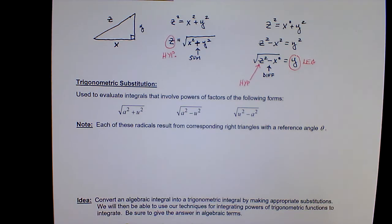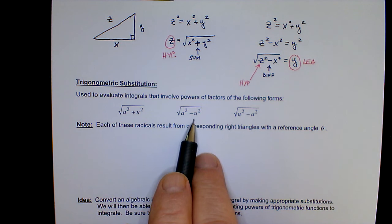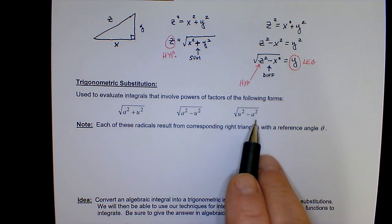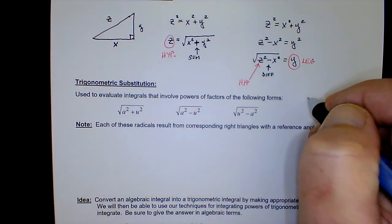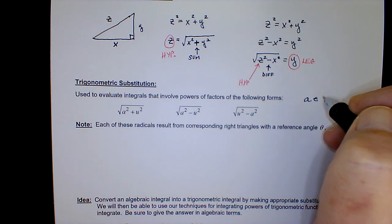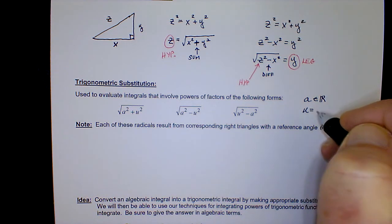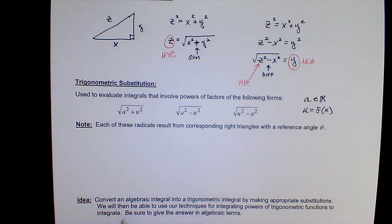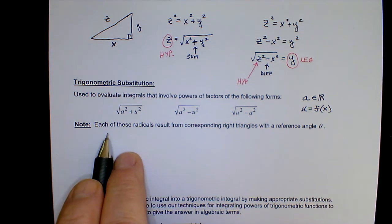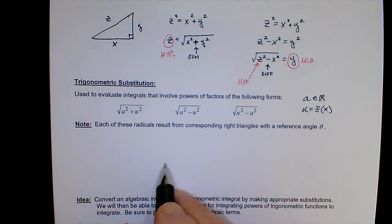What I've written here are the three possible situations we can come up with: either a sum of two squares, a difference of two squares of the form a squared minus u squared, or a difference of two squares of the form u squared minus a squared. Remember, just like with inverse trig integrals, a is the real constant and u is the variable or function of x. Each of these radicals results from corresponding right triangles with a reference angle of theta. So let's draw the three corresponding triangles.